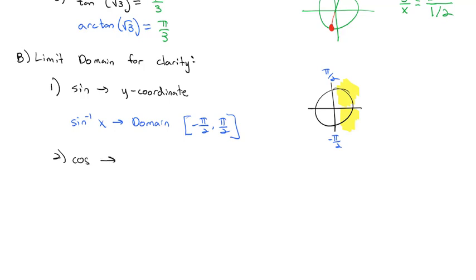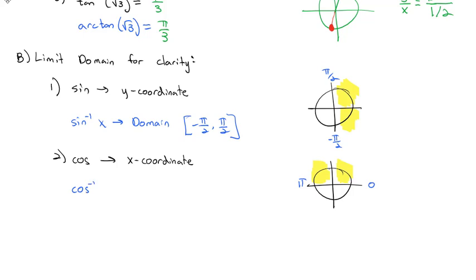Similarly, when we do the cosine, cosine looks at the x-coordinate. On the unit circle, we always use the first quadrant, then account for negatives on the x-coordinate, which are over to the top left. So we say cosine is going to go from 0 to pi. Cosine inverse of x has a domain from 0 to pi.